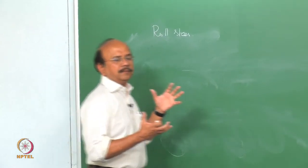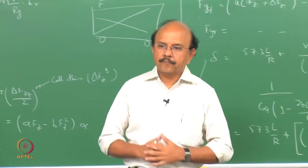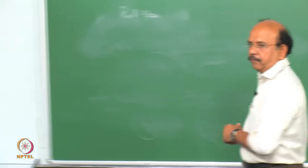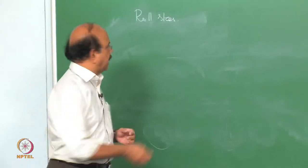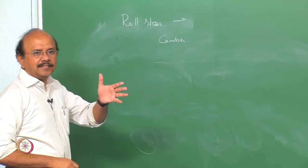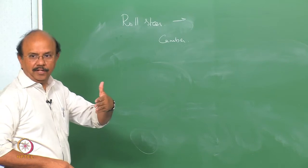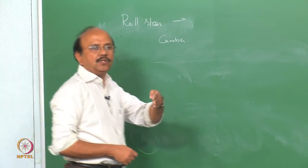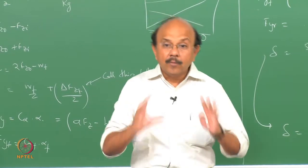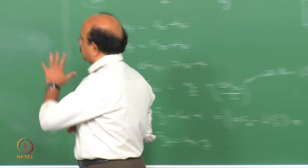The suspension is a mechanism — you use theories of mechanisms in order to analyze, for example, a MacPherson strut. So when there is a roll, there is a change in camber which we would separately deal with, as well as a change in the angle of the wheel — in other words, a change in toe. How much it changes is very, very important. Let us understand this clearly.